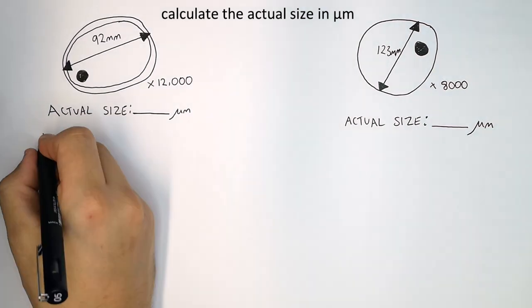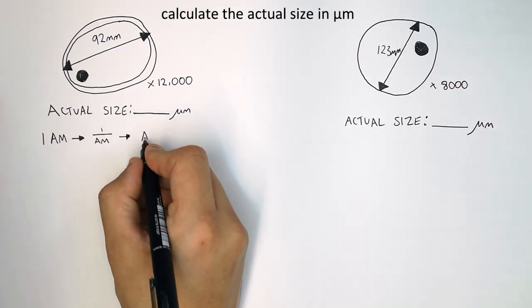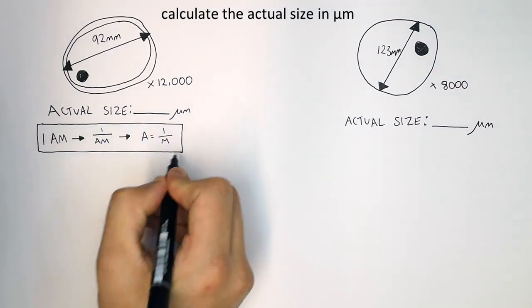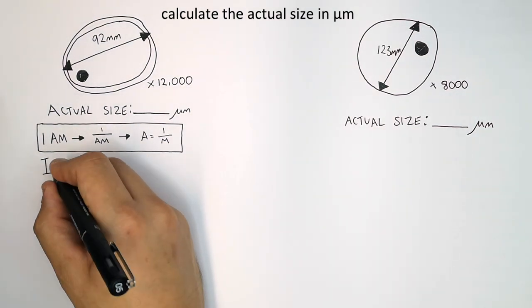So remember, I am, I over A times M, A equals I over M. Then what you do is you write I, A and M. You can fill in what you've got.